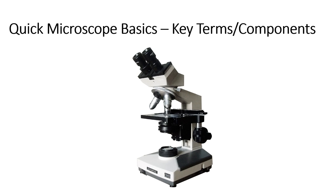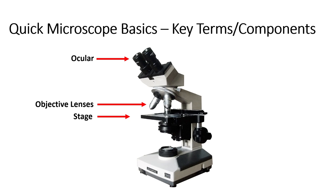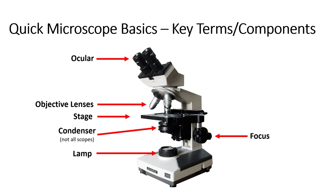A few quick terms and key components. The things you look through, the eyepieces, are properly called an ocular. The lenses that do most of the heavy lifting are called objective lenses. You of course have a stage — this is simply where your slide or your sample goes. Focusing knobs focus on the sample. A lamp or light source obviously provides the light. Not all microscopes will have this, but good ones will have something called a condenser, which we'll talk about later. And some microscopes will have stage controls, which allow you to very finely move your sample on the stage — nice to have, but not really required.